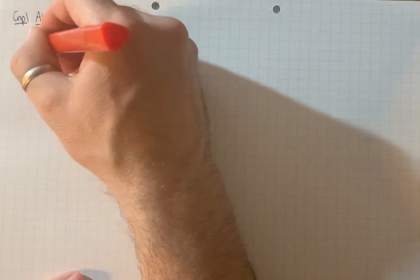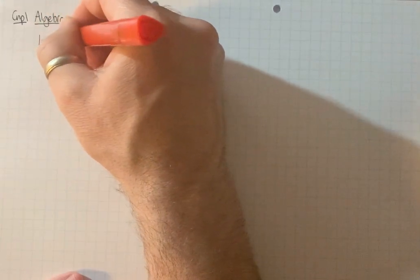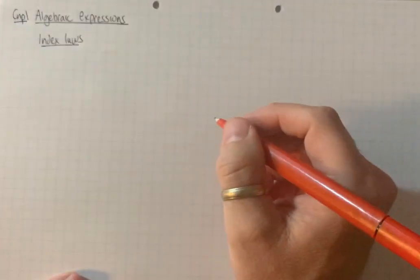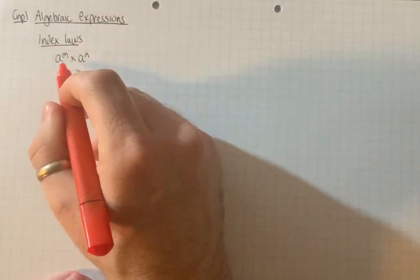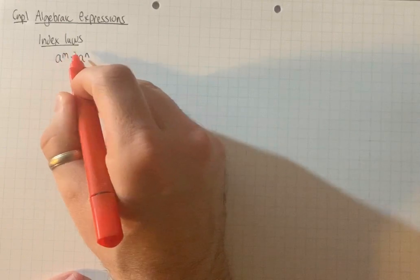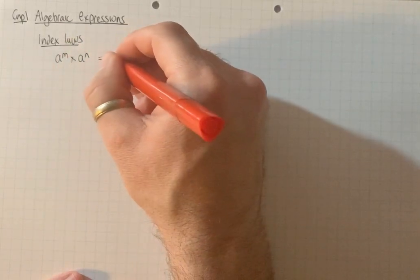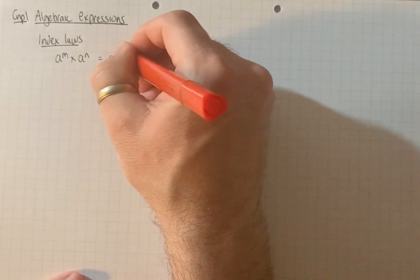First we're going to look at the index laws which you will have done some time ago. To bring them into a single base you just simply add the powers together.